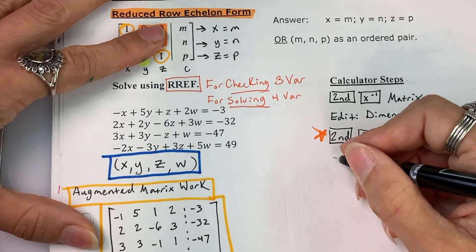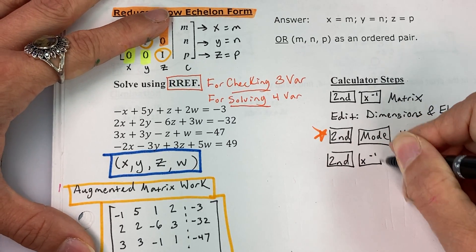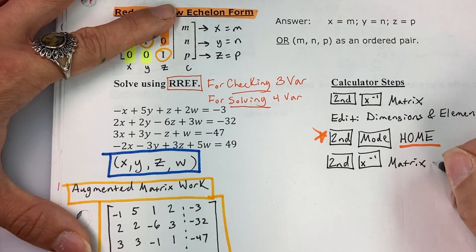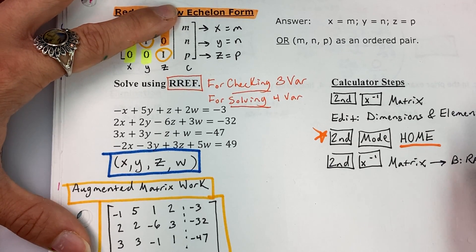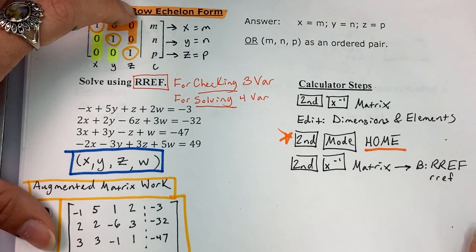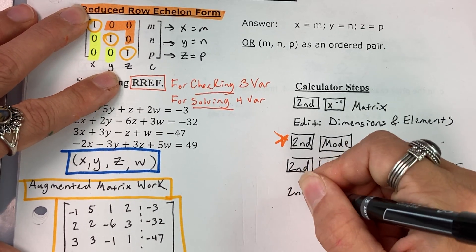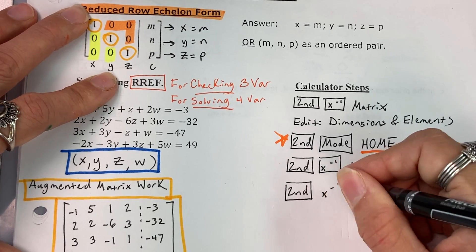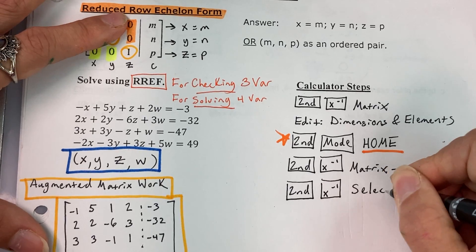And then second, x to the negative one, again, to go back to the matrix part of your calculator. And then you will select option B, which is reduced row echelon form. And I think it's actually in lowercase letters on your calculator. Not that that really matters, but that's how it will look on your calculator screen. Lastly, second, x to the negative one, again, and then you select the matrix.